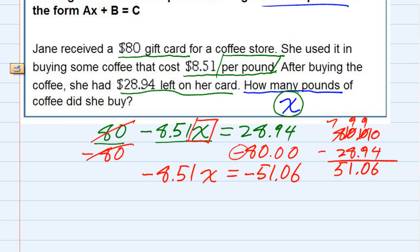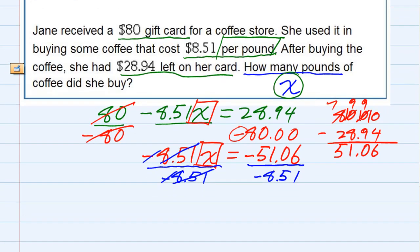We're almost there. To solve for x, we need to get rid of that -8.51 in front of it. I'm going to undo multiplication with division, dividing by -8.51 on both sides. On the left-hand side, the 8.51 and the negatives cancel, leaving just x. On the right-hand side, the negatives cancel, and 51.06 divided by 8.51 equals 6.